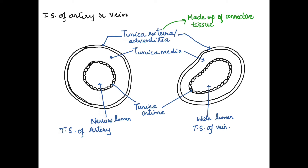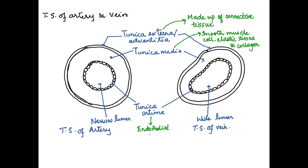The tunica externa or adventitia is made up of fibrous connective tissue. The tunica media is made up of smooth muscle cells and has elastic fibers as well as collagen fibers. In the artery this is important because it needs to withstand the pressure with which blood is pumped from the heart — the elastic and collagen fibers allow it to expand and recoil. The tunica intima is made up of endothelial cells, which line the inner lining of the blood vessels.